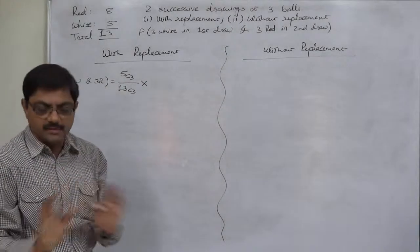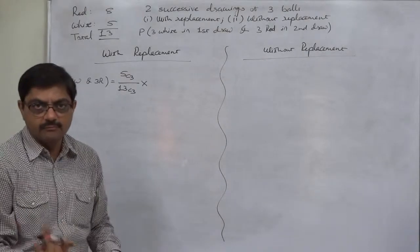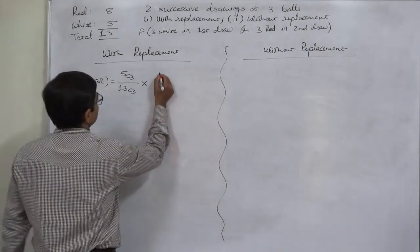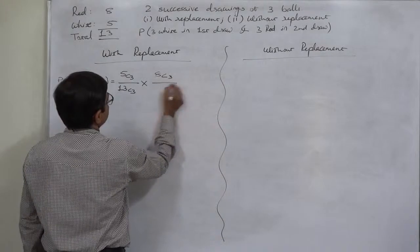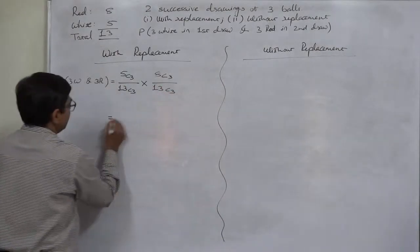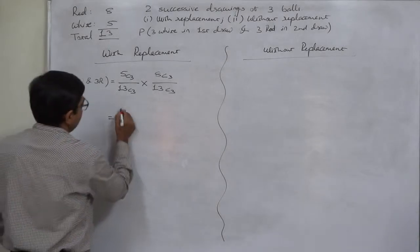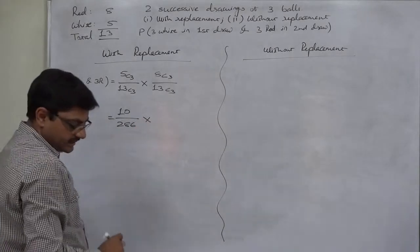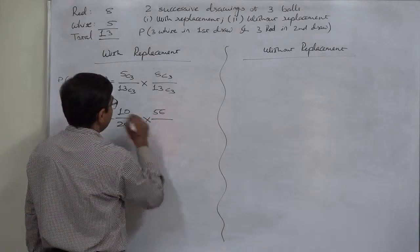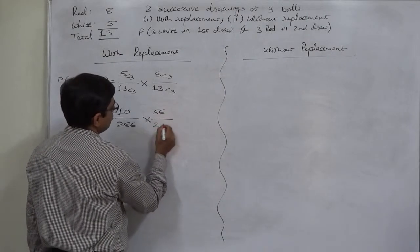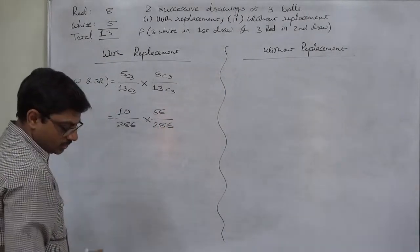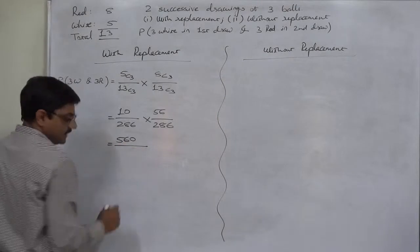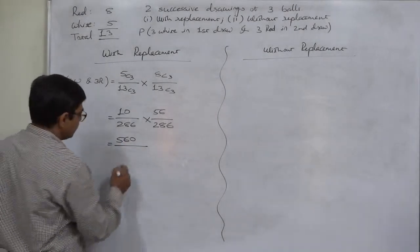These three white balls are replaced, meaning again there are 13 balls — eight red, five white. Now the second draw is made expecting three red balls, so it is 8C3 divided by 13C3. 5C3 gives us 10, 13C3 gives us 286, multiplied by 8C3 which gives 56, and 13C3 again 286. So the result is 10 × 56 = 560, divided by 286 × 286 = 81796.